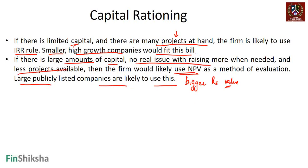Large publicly listed companies are likely to use NPV because they have no shortage of capital — they can borrow or issue shares — and the projects available to them are fairly well-defined. In practice, if large amounts of capital are available, companies tend to use the NPV rule. If there is capital rationing and many projects at hand, smaller high-growth companies tend to use the IRR rule. Technically, NPV is probably better than IRR overall.